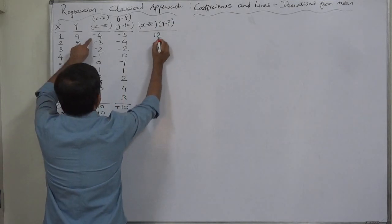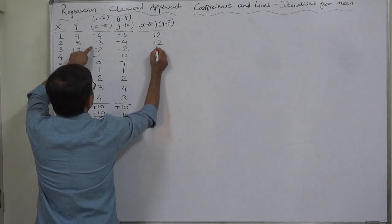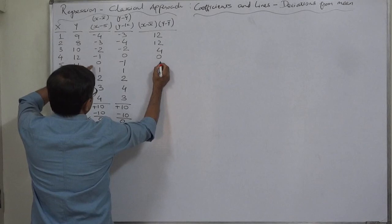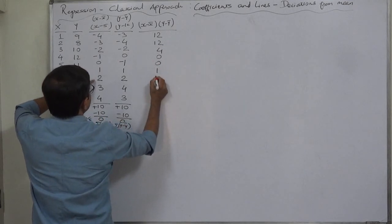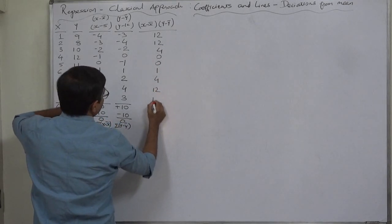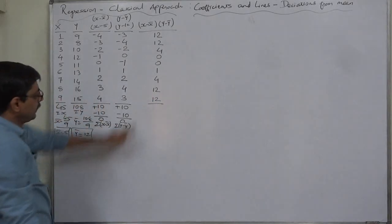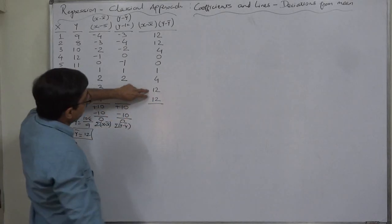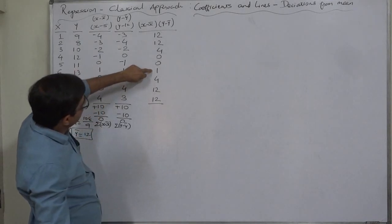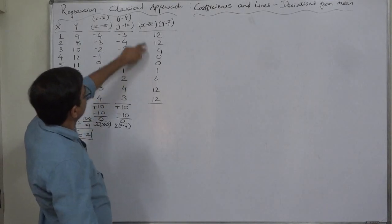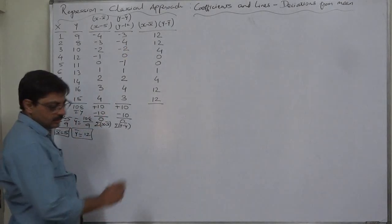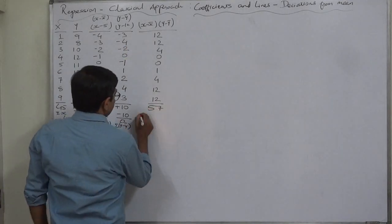Now we compute the product column (x - x̄)(y - ȳ): (-4)×(-3)=12, (-3)×(-4)=12, (-2)×(-2)=4, anything×0=0, 1×1=1, 2×2=4, 3×4=12, 4×3=12. The total is 12+12=24, +4=28, +1=29, then 29+12+12+4 = 57. So Σ(x - x̄)(y - ȳ) = 57.